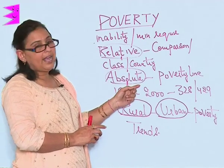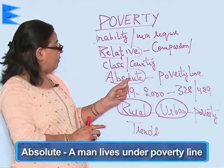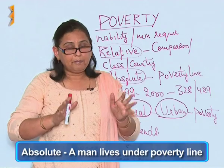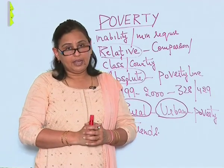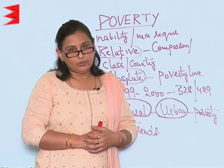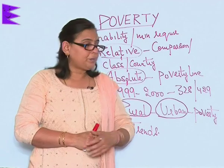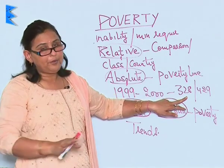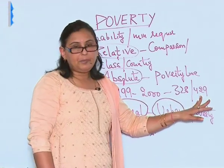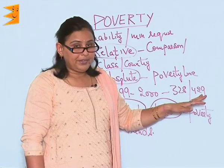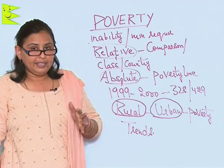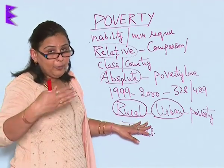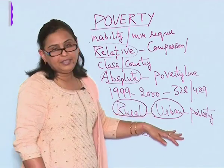The other kind of poverty is absolute poverty — when a person lives below the poverty line. According to an economic survey done in 1999-2000, people in rural areas earning less than 328 rupees a month and those in urban areas earning less than 429 rupees a month fell in the zone of poverty. When we talk of poverty, the next thing is evaluating it in rural and urban areas.